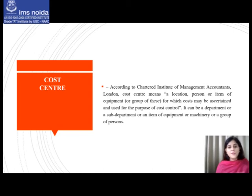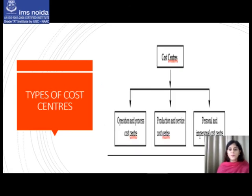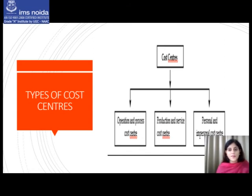Cost centers can generally be divided into three types: operation and process cost centers, production and service cost centers, and personal and impersonal cost centers. An operation cost center consists of machines which carry on the same operation. A process cost center is one in which a specific or continuous process of operations is carried out.